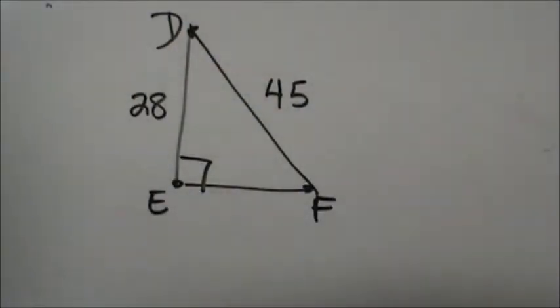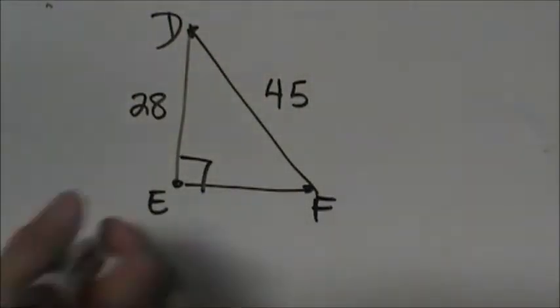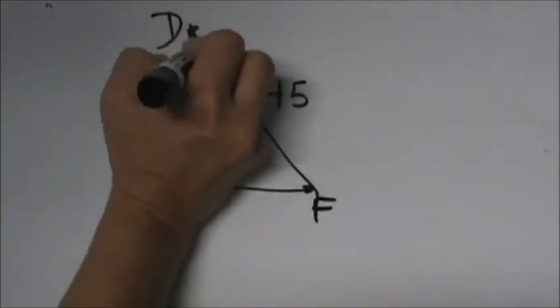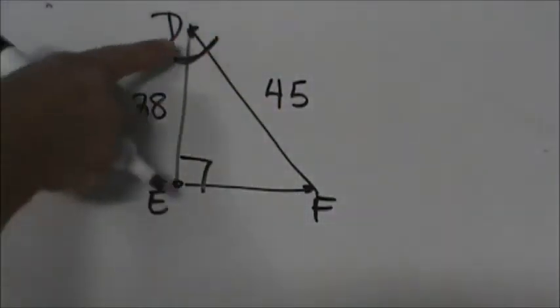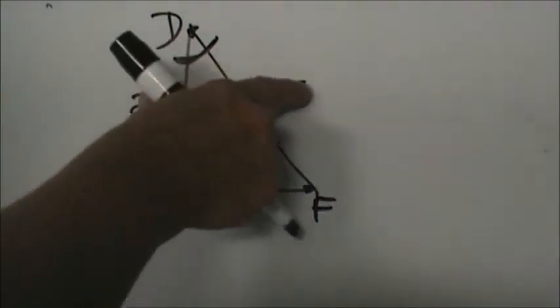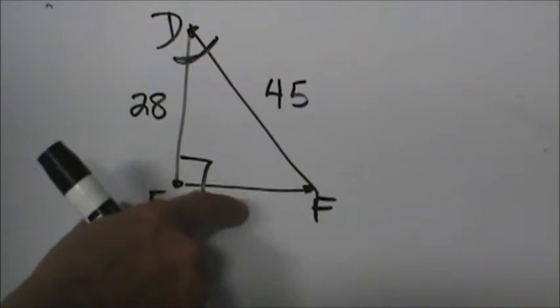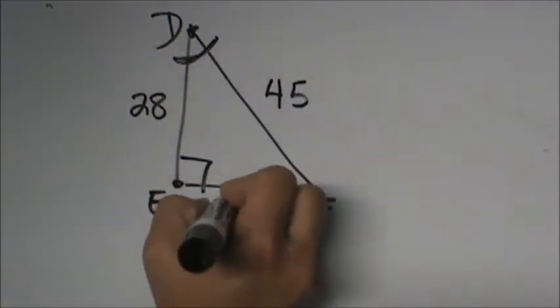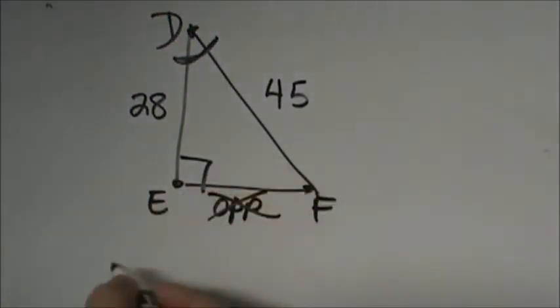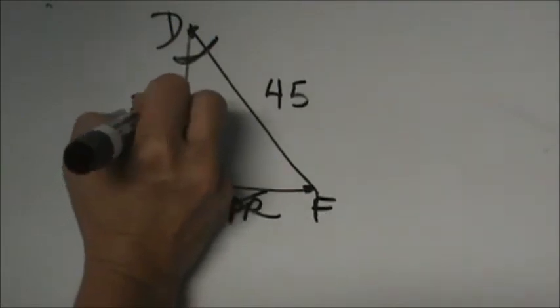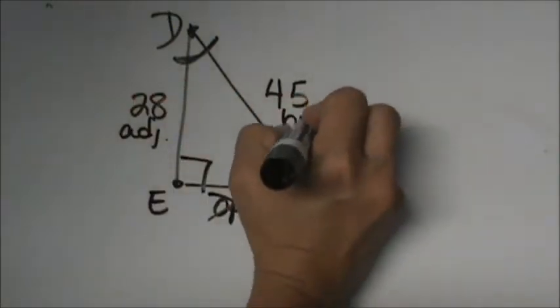What we need to do first is decide which is our unknown angle. D is where we are working from. From this reference angle, which two sides do we have? This side over here is our opposite and we are not using it. We have the adjacent and we have the hypotenuse.